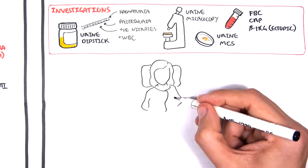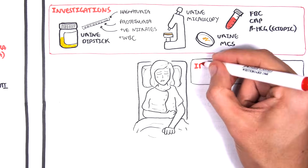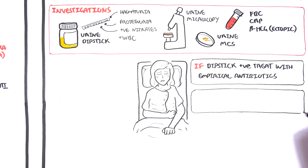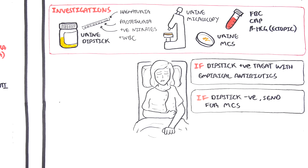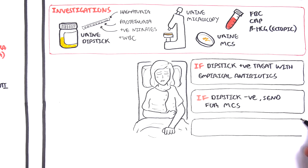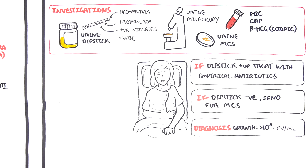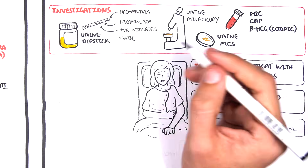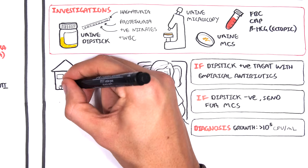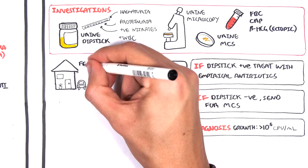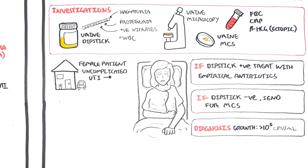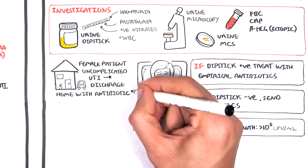For UTI, if the urinary dipstick is positive, treat with empirical antibiotics. If the dipstick is negative but you still suspect UTI, send for microscopy culture and sensitivity using the urine sample. The diagnosis of a UTI is a bacterial growth on a culture plate of more than 10,000 colony-forming units per millilitre. Urinary tract infections are common in females, so if a female patient presents with an uncomplicated UTI, she is most likely able to be discharged home with oral antibiotics.